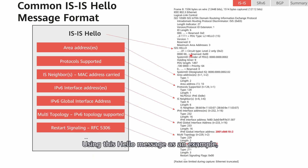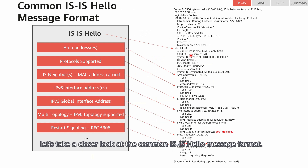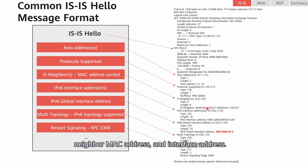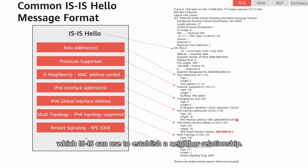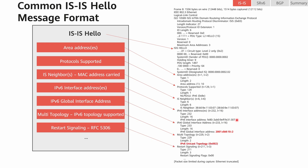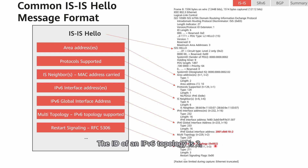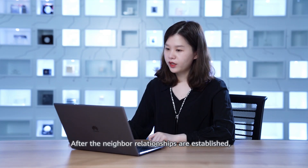After basic IS-IS configurations are completed on P1, the P, and P2, IS-IS neighbor relationships can be established using IS-IS hello messages. The hello message carries multiple pieces of information, including the IS-level, system ID, area address, supported protocol, enable MAC address, and interface address. In this example, the interface address is a link-local address, which IS-IS uses to establish a neighbor relationship. Below the user-configured global unicast address, we can see topology information indicating the IPv6 independent topology previously enabled. The ID of an IPv6 topology is 2, while that of an IPv4 topology is 0.